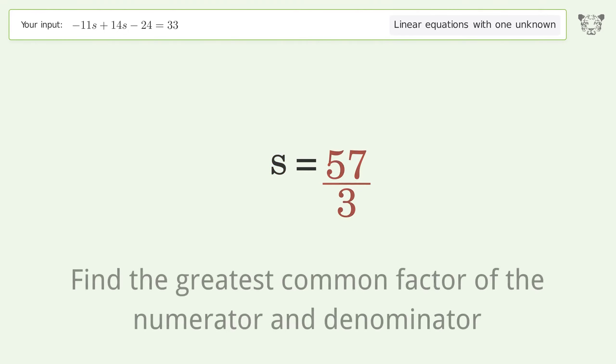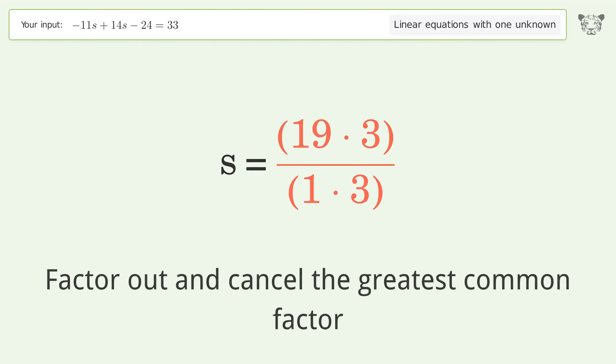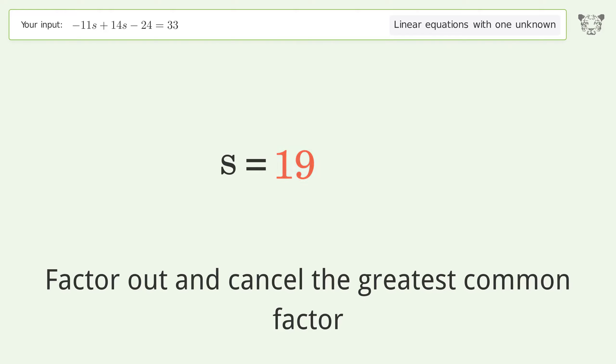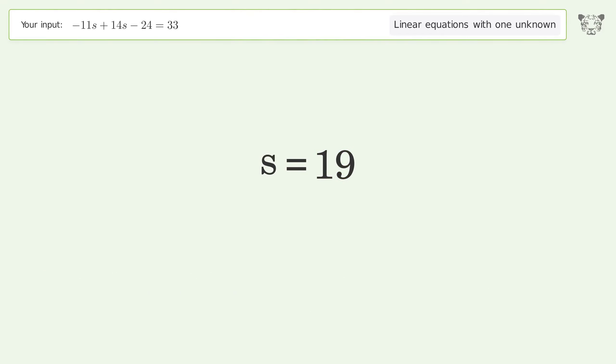Find the greatest common factor of the numerator and denominator, then factor out and cancel the greatest common factor. The final result is s equals 19.